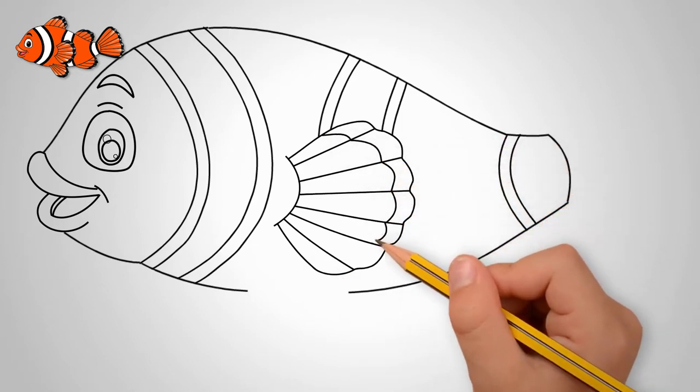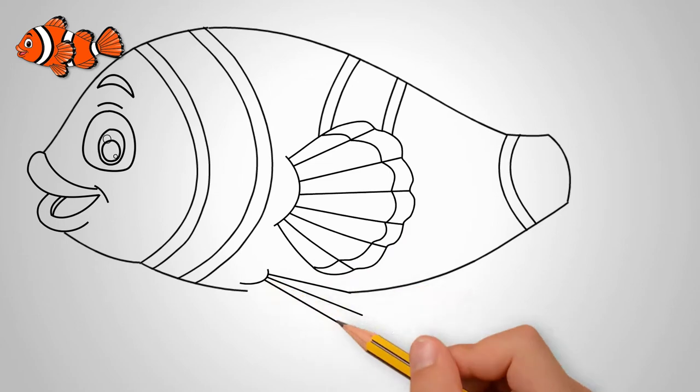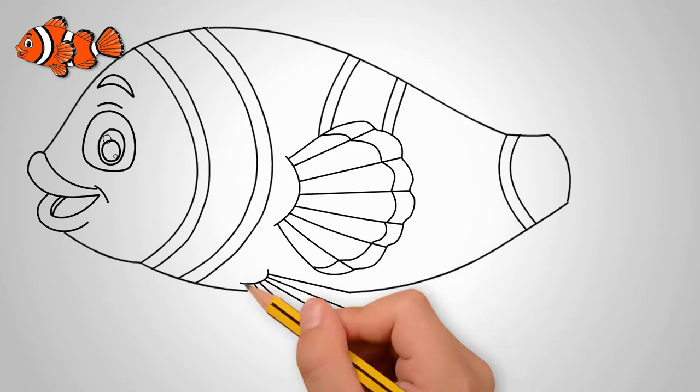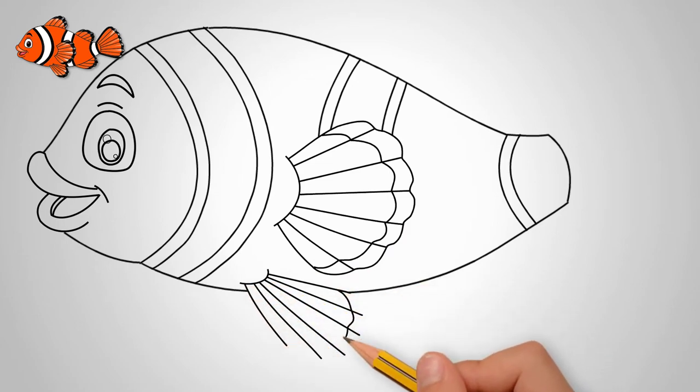Almost in the middle of the body draw a fin. It consists of many bones. Draw the details of the fin. On the fin too, draw two parallel arcs, as on the torso.